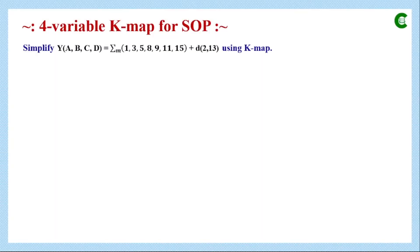We will directly simplify boolean expressions for four variables. Here the function is defined by four variables A, B, C, D and expressed by min terms, plus a D (don't care) function with two terms. Terms 2 and 13 are the don't care terms; all other terms listed are min terms. We will now see how to use those don't care terms in simplification.